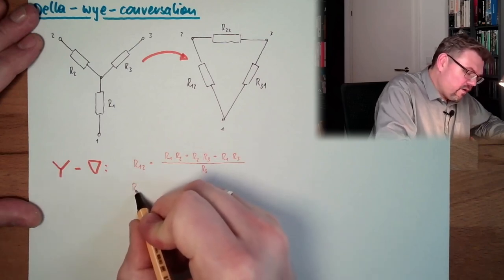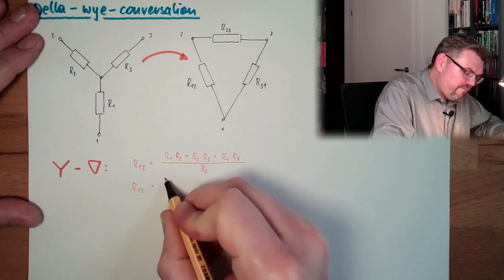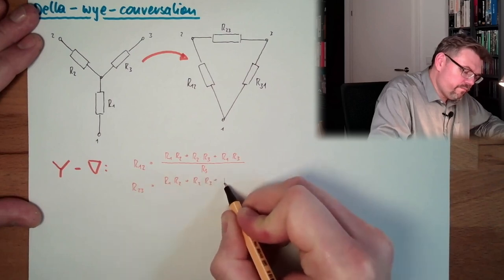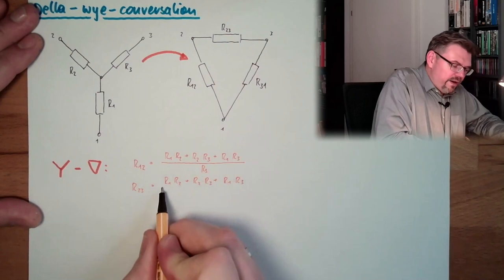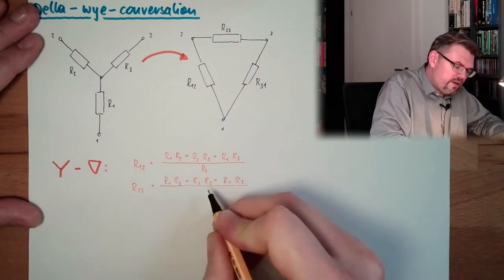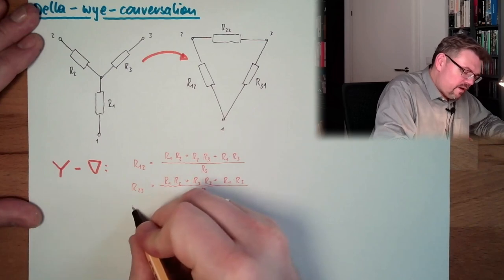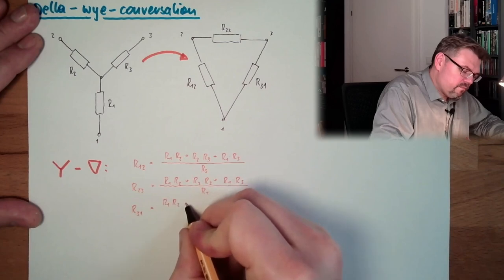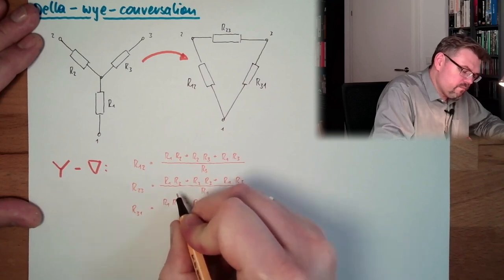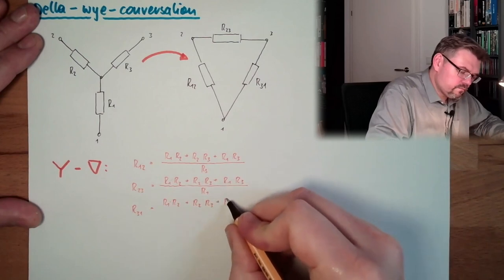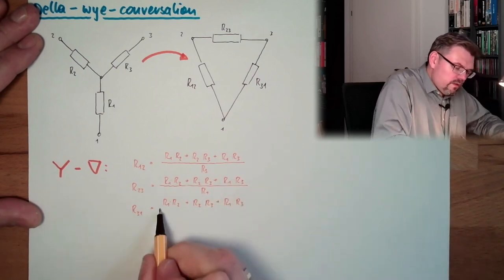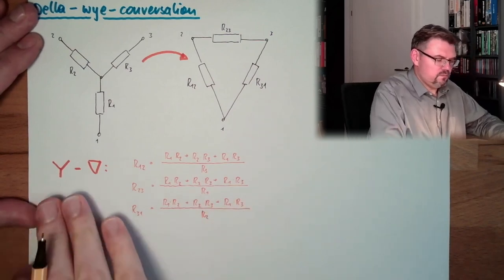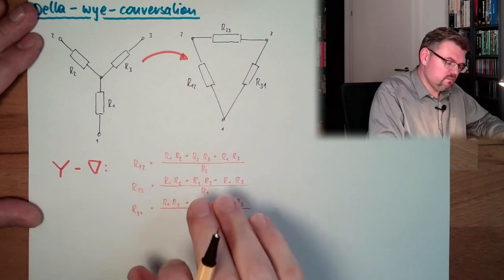And r23, the top part is again the same, divided by the one which is not there, and this is r1. And here r31, the top part is the same, divided by the one which is not there, and this is r2. From Y to delta, use these formulas.